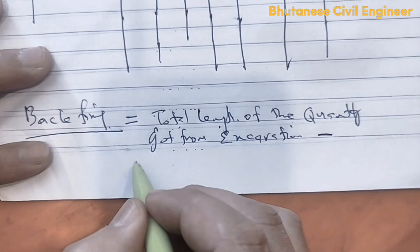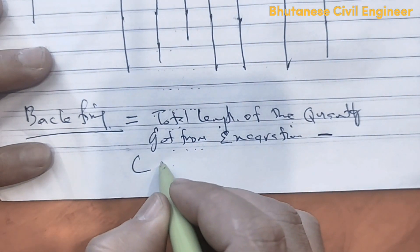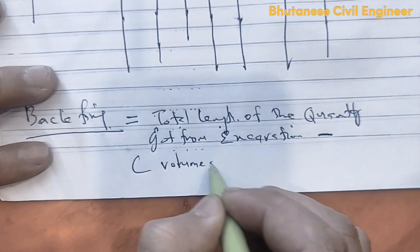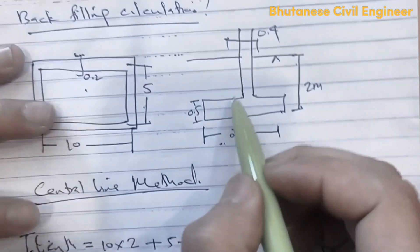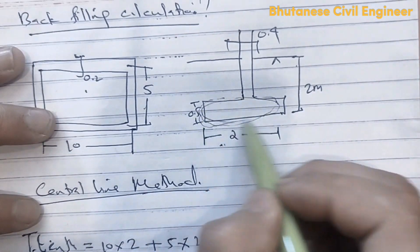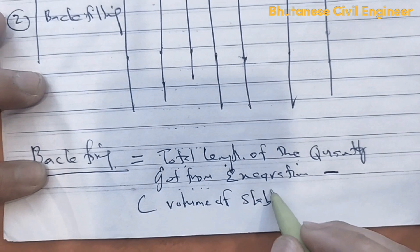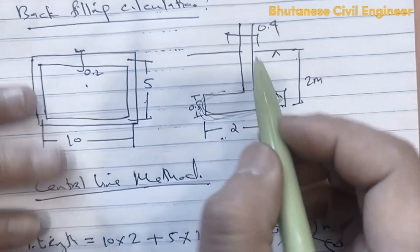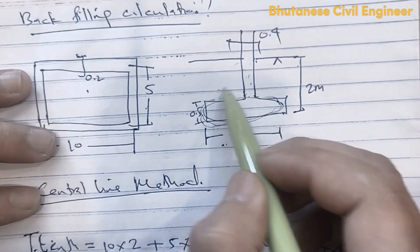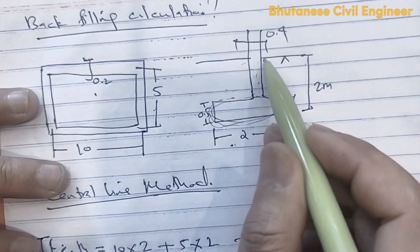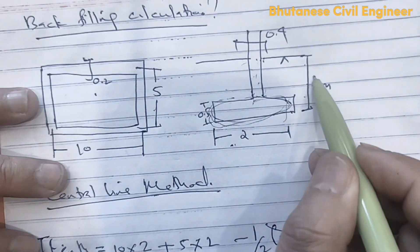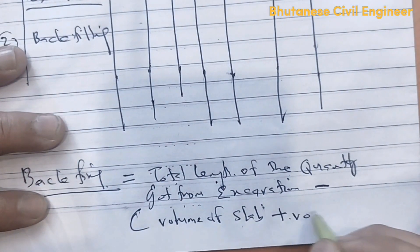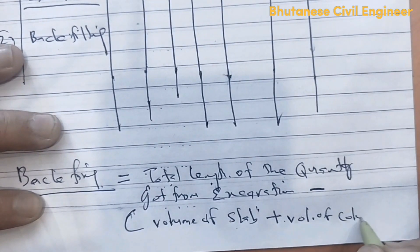Backfilling volume equals volume of excavation minus volume of slab, minus volume of column. This is an open bracket. This is a column that will be backfilling. The volume of the column is set.